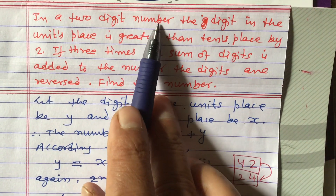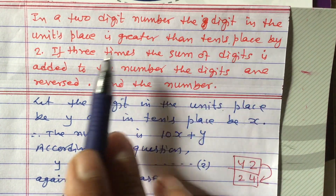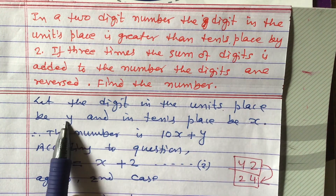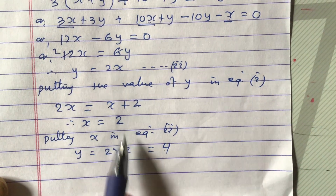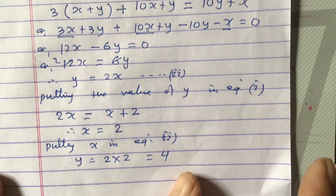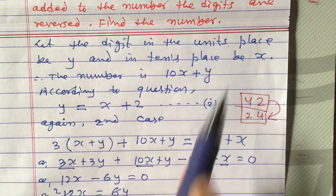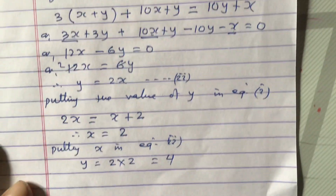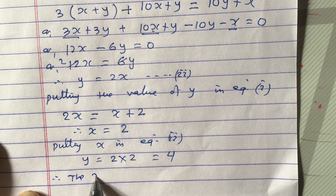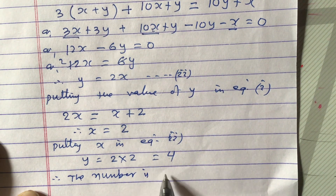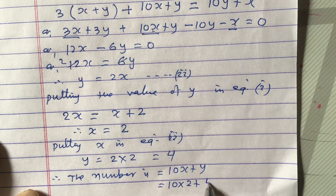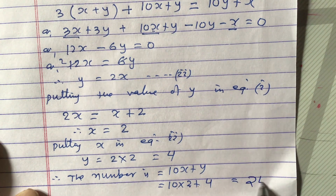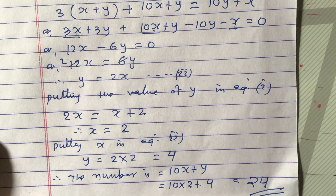Verifying: the digit in the units place is y = 4 and the tens place is x = 2, so y is greater than x by 2 — which matches the condition. The number is 10x + y = 10 × 2 + 4 = 20 + 4 = 24. So 24 is our required number. Thank you for watching this video.